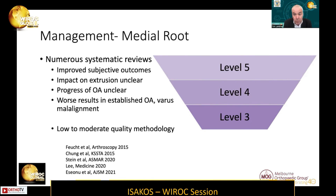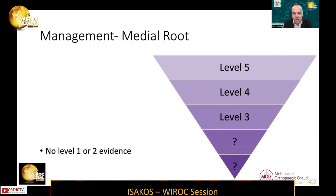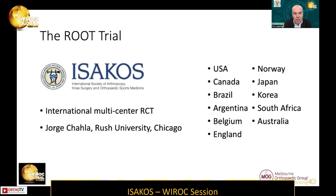There have now been a number of systematic reviews, which again show improved subjective outcomes. The impact of root repair on meniscus extrusion and progression of arthritis is unclear, and worse results are seen in established osteoarthritis and varus malalignment. These systematic reviews do note that the papers are generally of low to moderate methodological quality, and what we're lacking is high-level, level one or level two evidence. There is now a multicenter prospective randomised trial sponsored by ISAKOS, led by Jorge Chahla from Rush University, comparing meniscus root repair versus non-operative management.